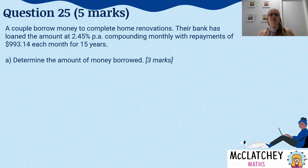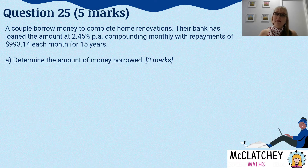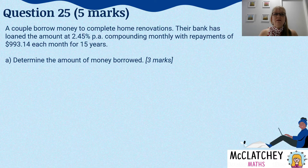We're on to question 25, which is worth five marks — a fair bit of the paper dedicated to annuities. A couple borrow money to complete home renovations. Their bank has loaned the amount at 2.45% per annum compounding monthly, with repayments of $993.14 every month for 15 years. Determine the amount of money borrowed — worth three marks.